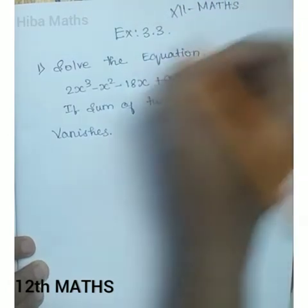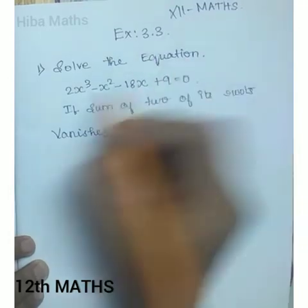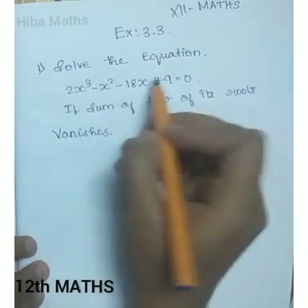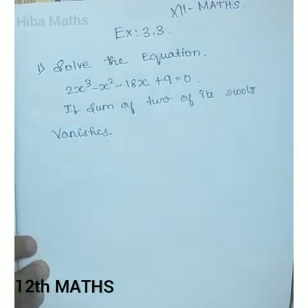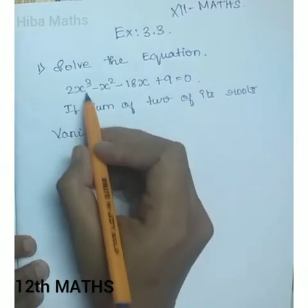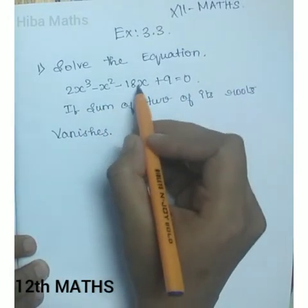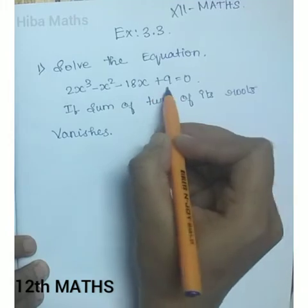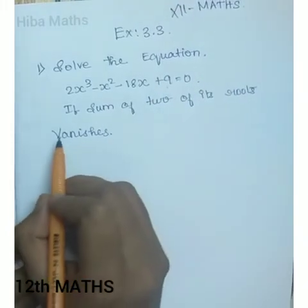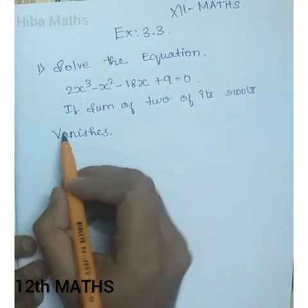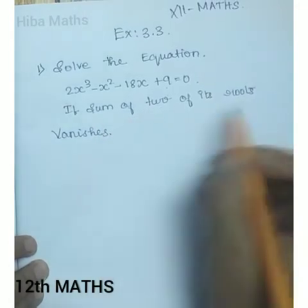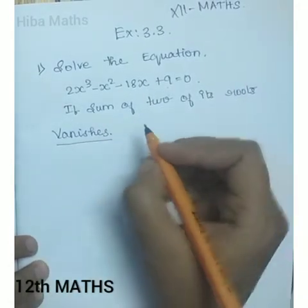So, 12th standard exercise 1.3, first question: solve the equation 2x³ - x² - 18x + 9 = 0, with the condition that the sum of two of its roots vanishes.